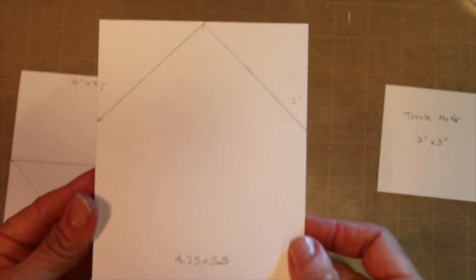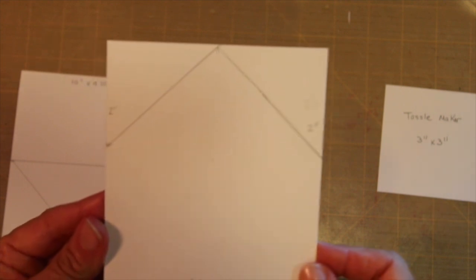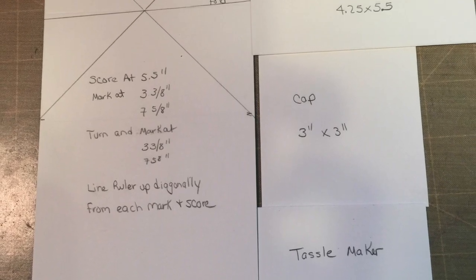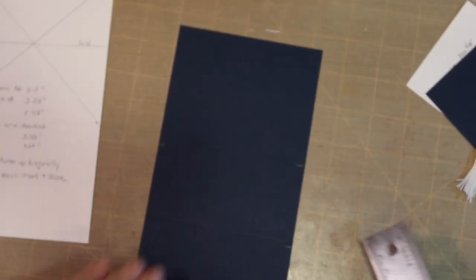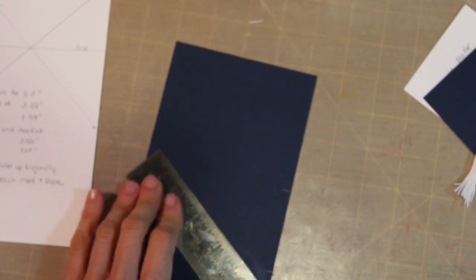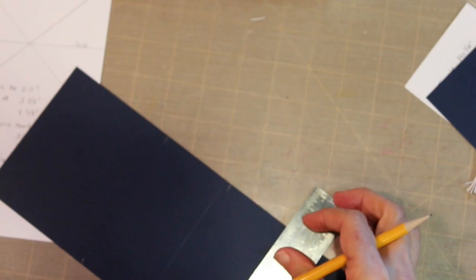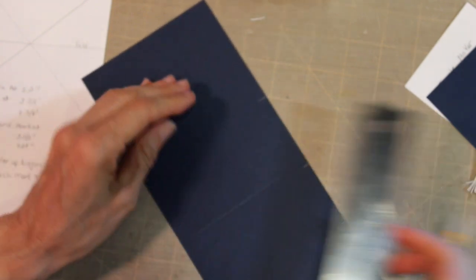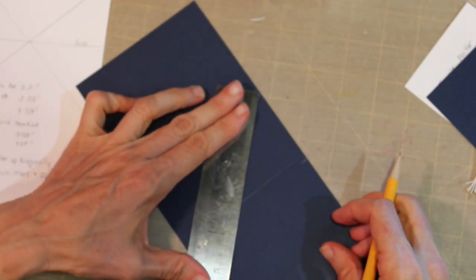And then for the inside you're going to need another panel which I've marked. You're going to need a 3 by 3 inch square for the cap and a 3 by 3 inch piece of cardboard to make the tassel.